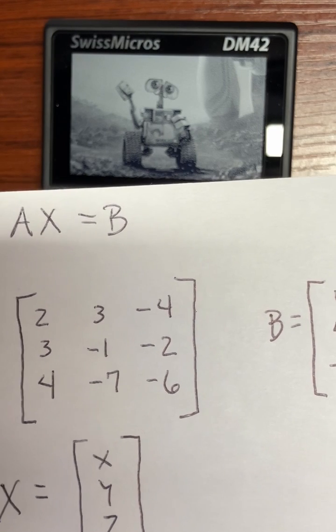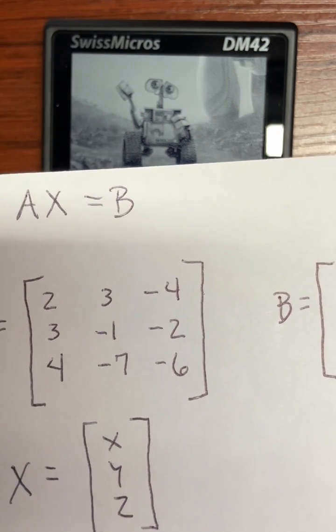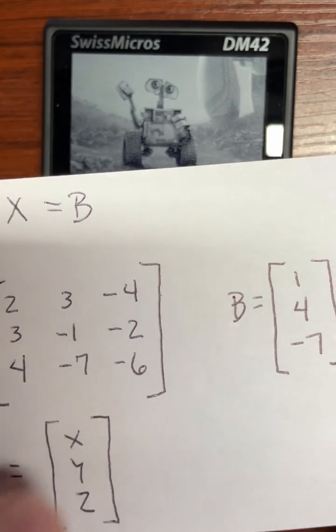You can set your matrices up like this, where these are the coefficients for the unknown variables and those are solutions.